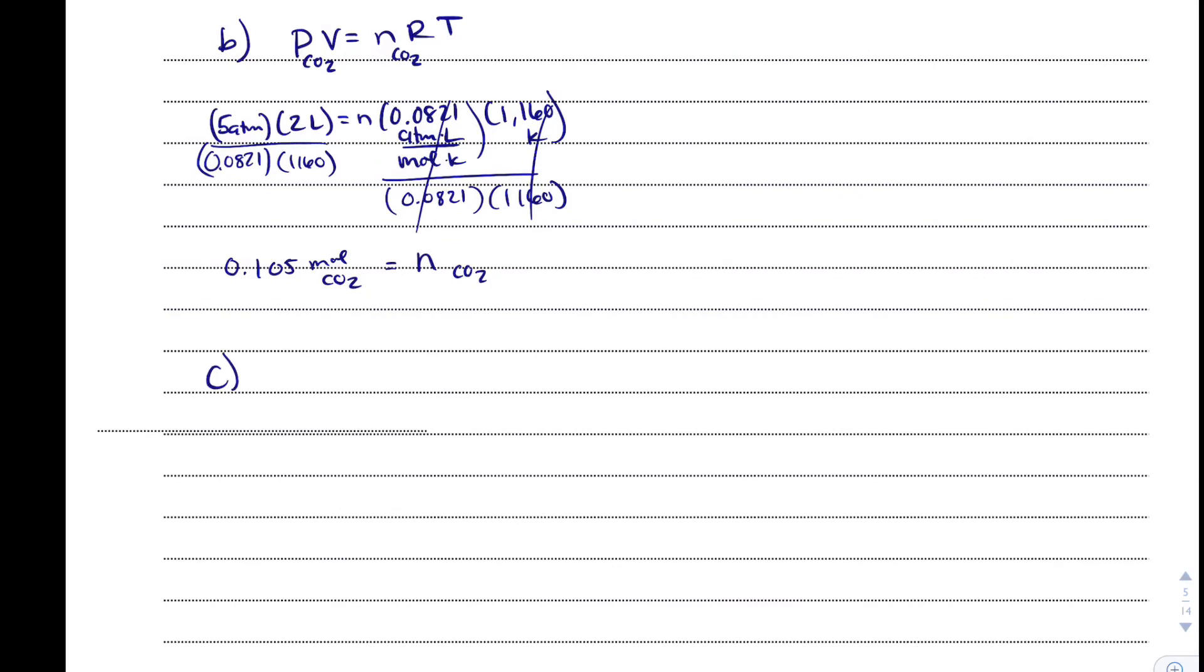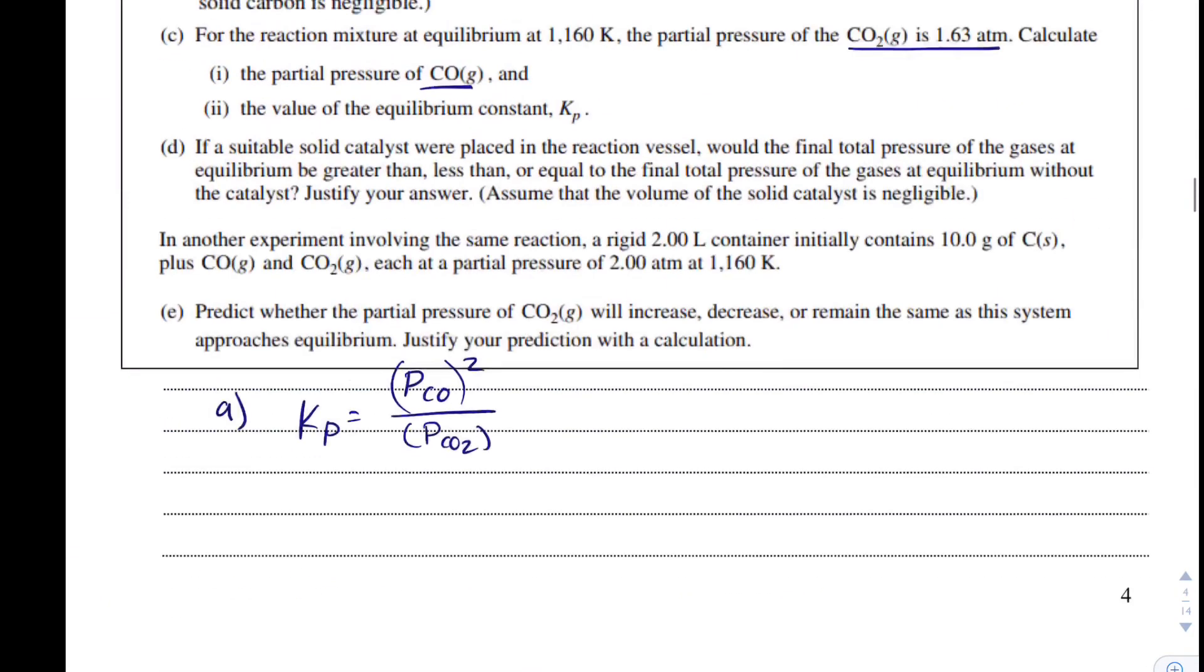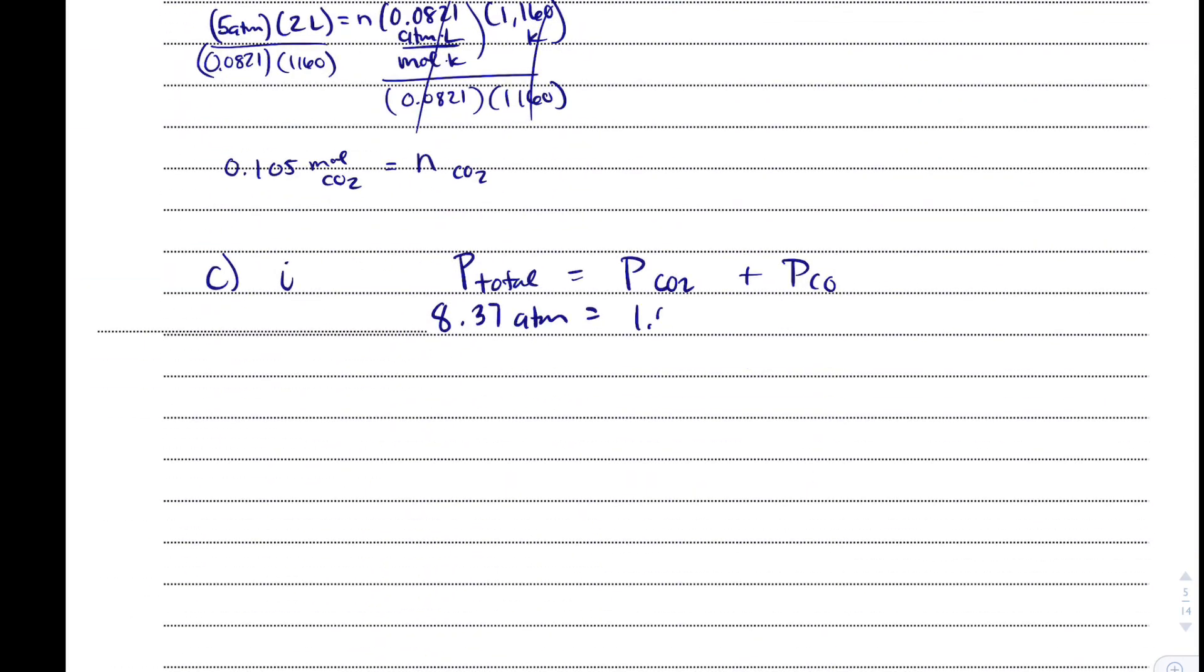So what I'm going to do in C part 1 is I'm going to use Dalton's laws of partial pressure, which sounds fancy, but all it says is that the total pressure is going to be equal to the pressure of CO2 and the pressure of just carbon monoxide. The total pressure from the table is 8.37 ATMs. The pressure they gave us was for CO2, so that's 1.63 ATMs. And so I can solve for the pressure of carbon monoxide. I'll subtract 1.63. And the pressure of carbon monoxide that I get is going to be 6.74 ATMs.